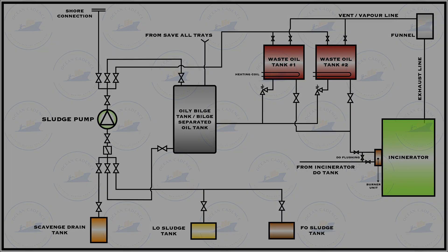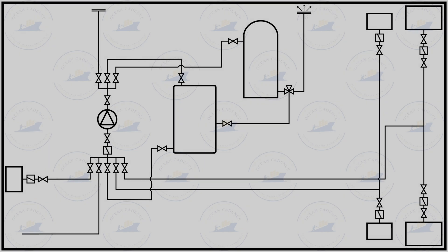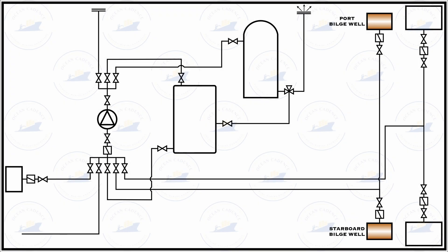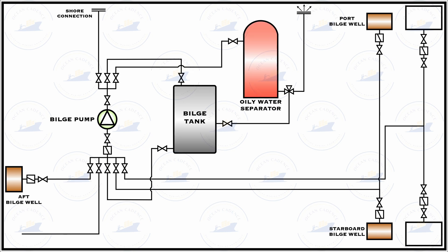Now let us shift our attention towards the bilge line. The bilge line in its simplest form has two typical bilge wells on the forward side of the vessel and one larger bilge well on the aft side. Taking suction from these bilge wells — either aft or forward — through the dedicated valve and filter assembly at the mouth of the bilge well, water from the bilges goes into the bilge pump. The bilge pump has a suction and discharge valve and a small filter at its suction. The discharge line goes to different elements: the shore connection for shore discharge, the bilge tank, and the oily water separator.